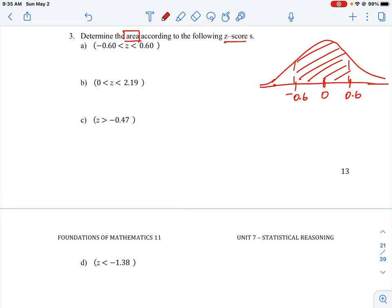So the easiest way for us to do this is to use our normal CDF function that you have in your graphing calculator where we put in our lower boundary. So our lower boundary here is going to be negative 0.6. Our upper boundary is going to be positive 0.6.